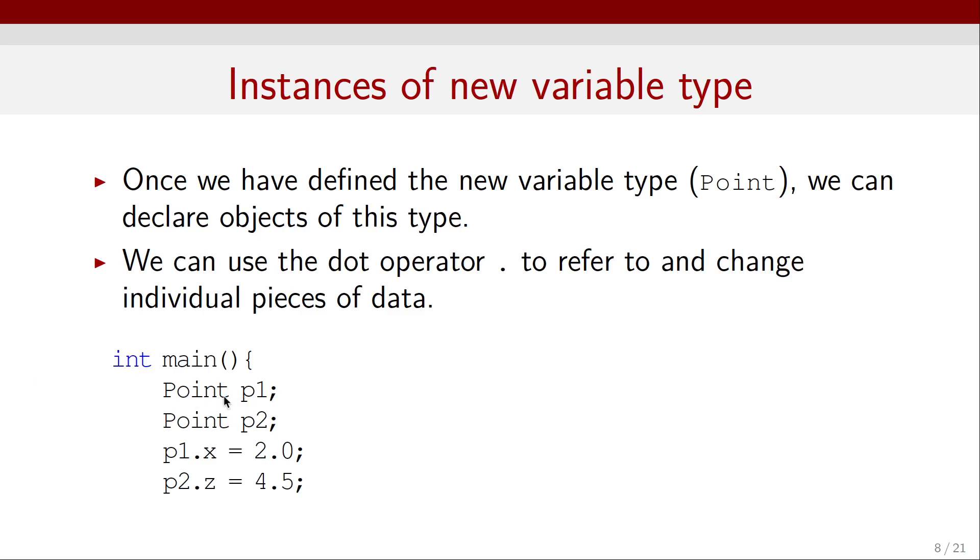So here, inside the main function, I can declare a point p1 and a point p2. And if I want to modify some of the data inside those structures, I can access that data using the dot operator. For example, p1.x will modify the x component of the point p1. And we can set p1.x equal to 2. So, we know that the x component of the point p1 is going to be 2.